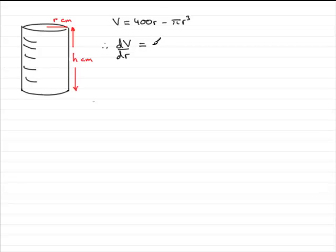Differentiate the first term: the power of R is 1, so just multiply 1 with the 400 and subtract 1 from the power, and you get R to power 0, or just simply 400. For the next term, we've got 3 times π is 3π, reduce the power by 1, so you've got R to power 2, minus 3πR².